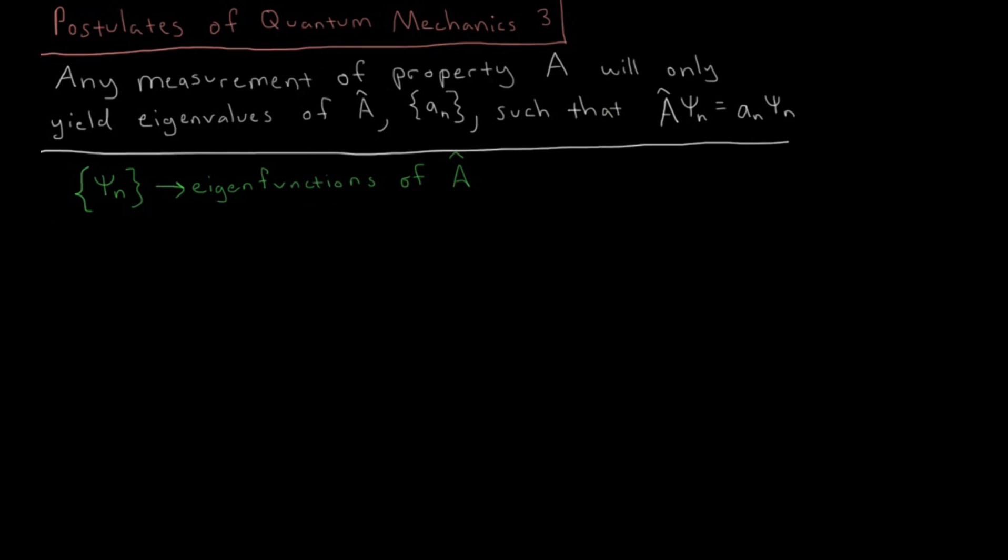And then we have this set of eigenvalues, A of n. And those eigenvalues are going to be the only possibilities for what we can measure.